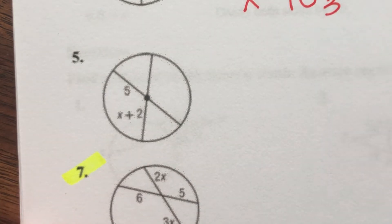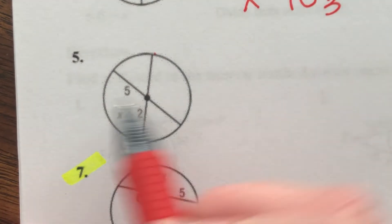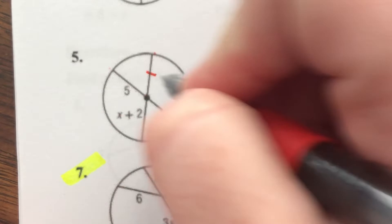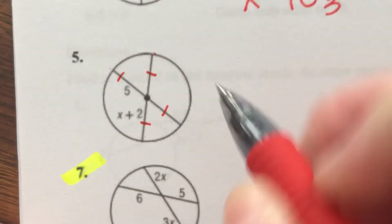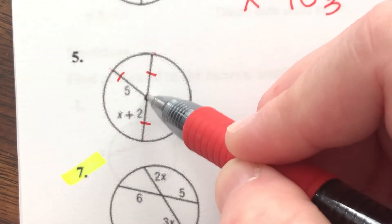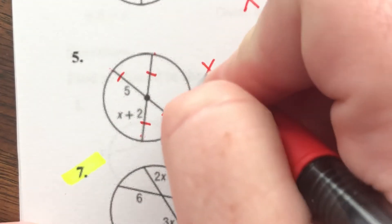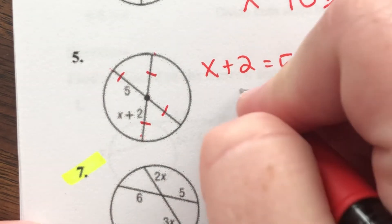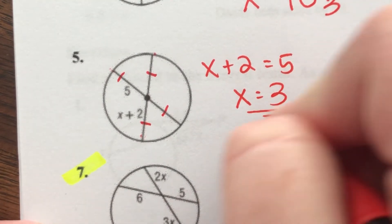Number 5, here we have two diameters. They go directly through the middle of our circle, which means that each segment is a radius, and the radius of a circle stays the same all the way around. So all of these are the same. So 5 is the same size as X plus 2. X plus 2 is equal to 5. So minus 2 on both sides, and X equals 3.